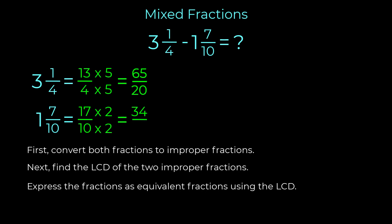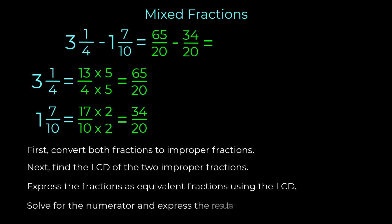Two times ten is twenty. Our equivalent fraction is thirty-four over twenty. So the problem has become sixty-five over twenty minus thirty-four over twenty. The numerator is sixty-five minus thirty-four, which is thirty-one. The denominator remains twenty.